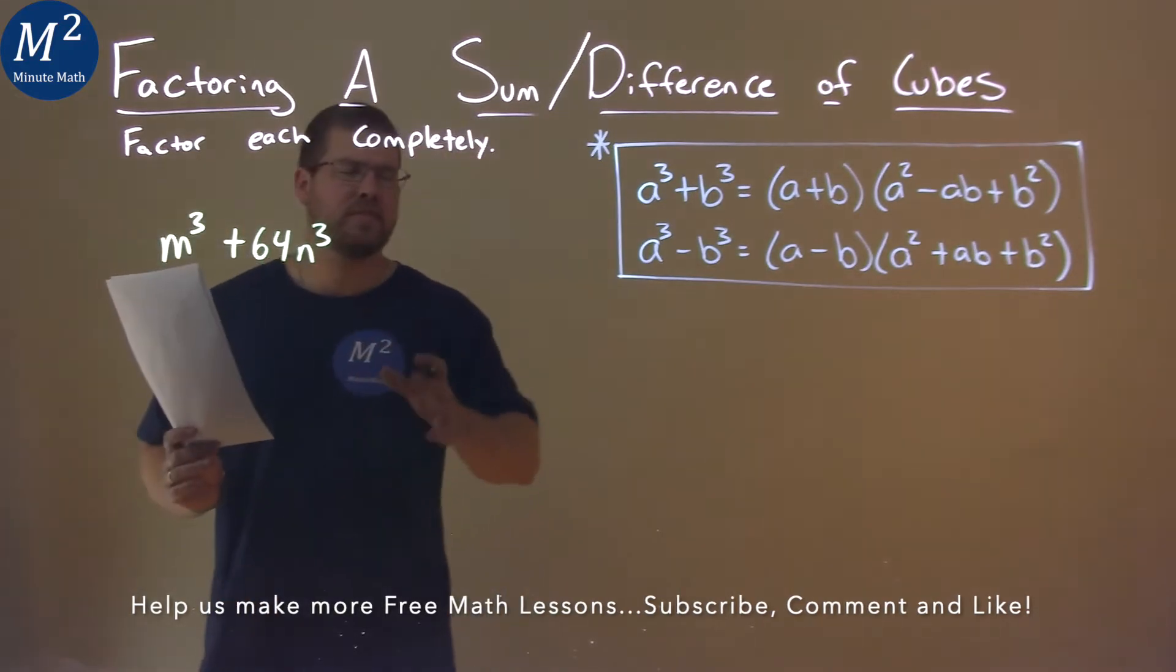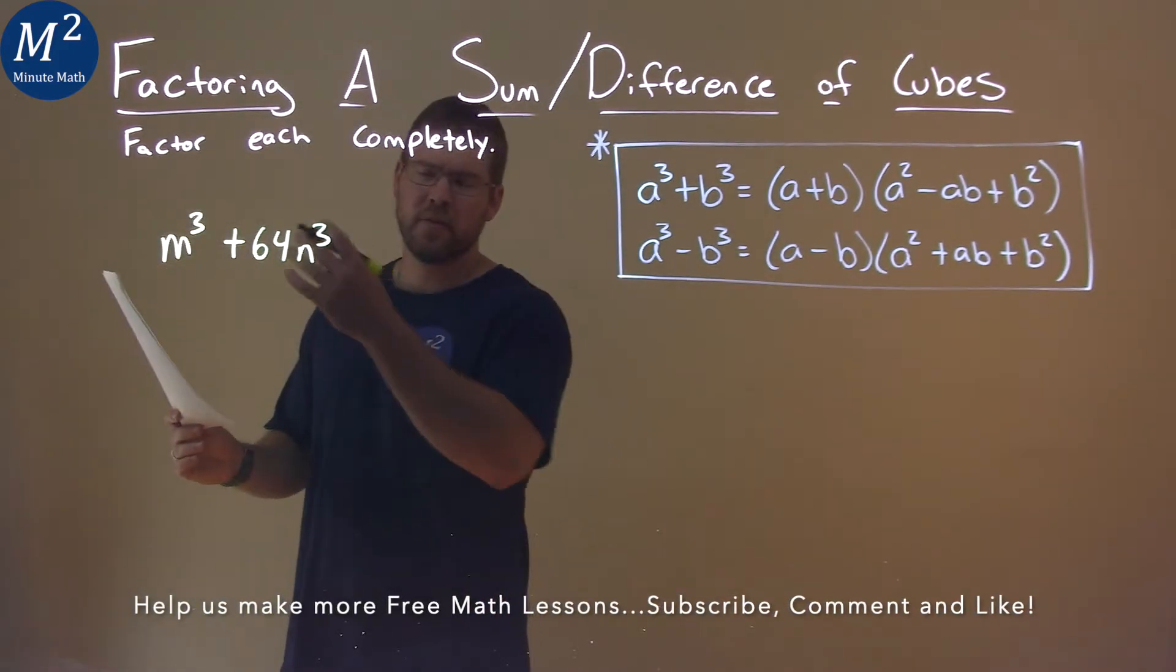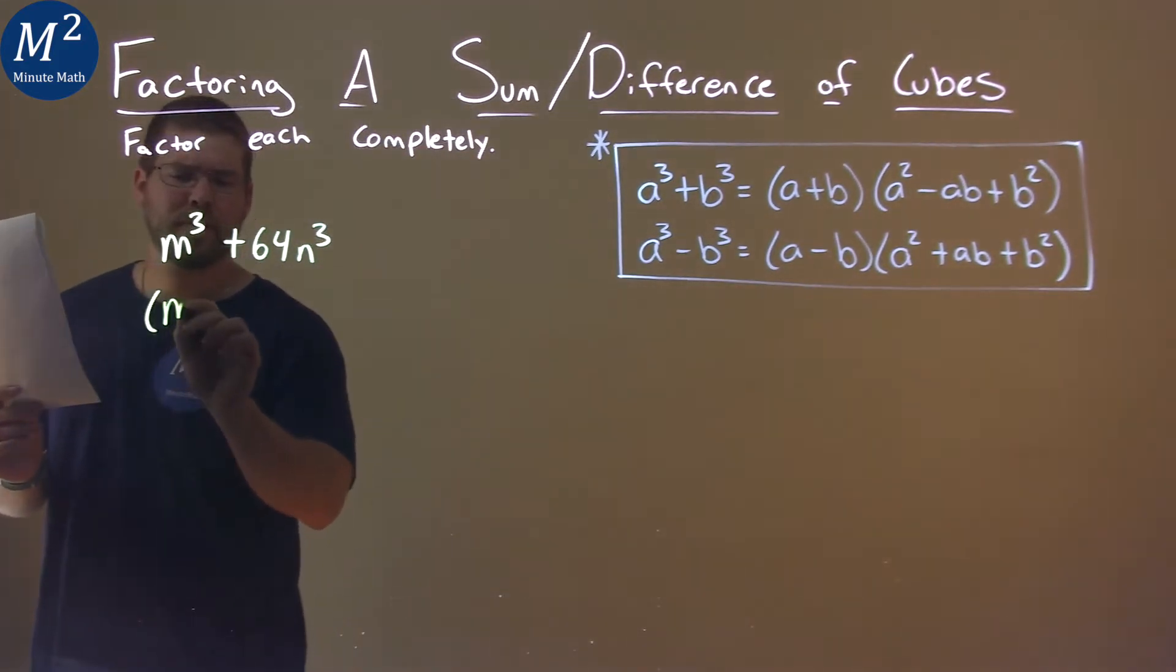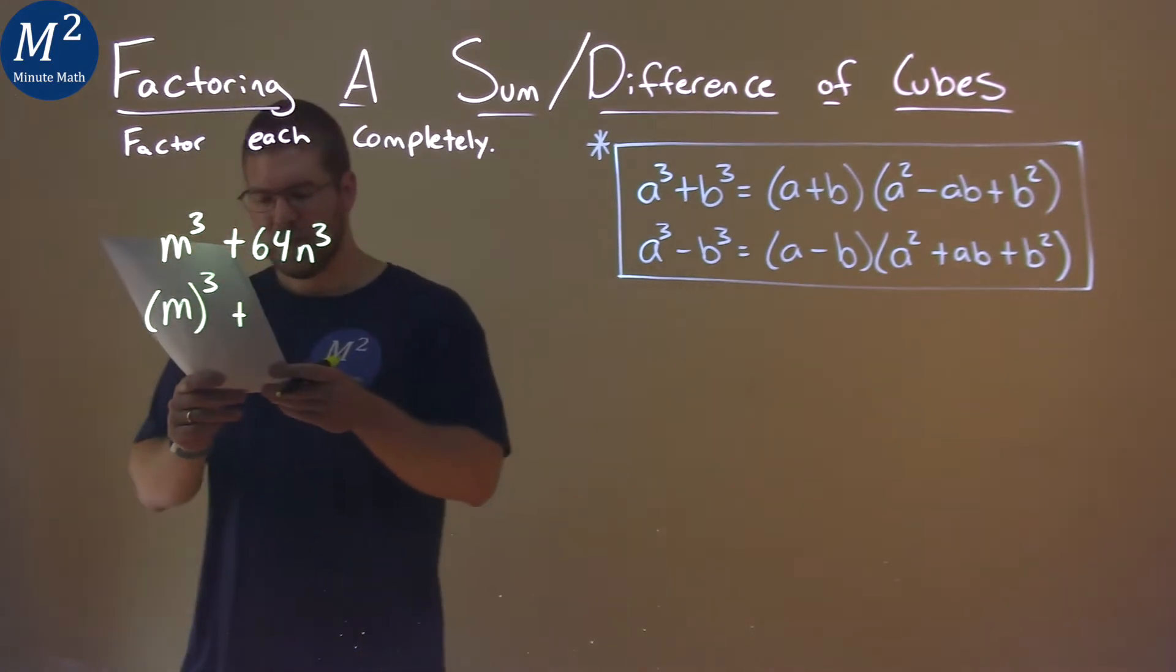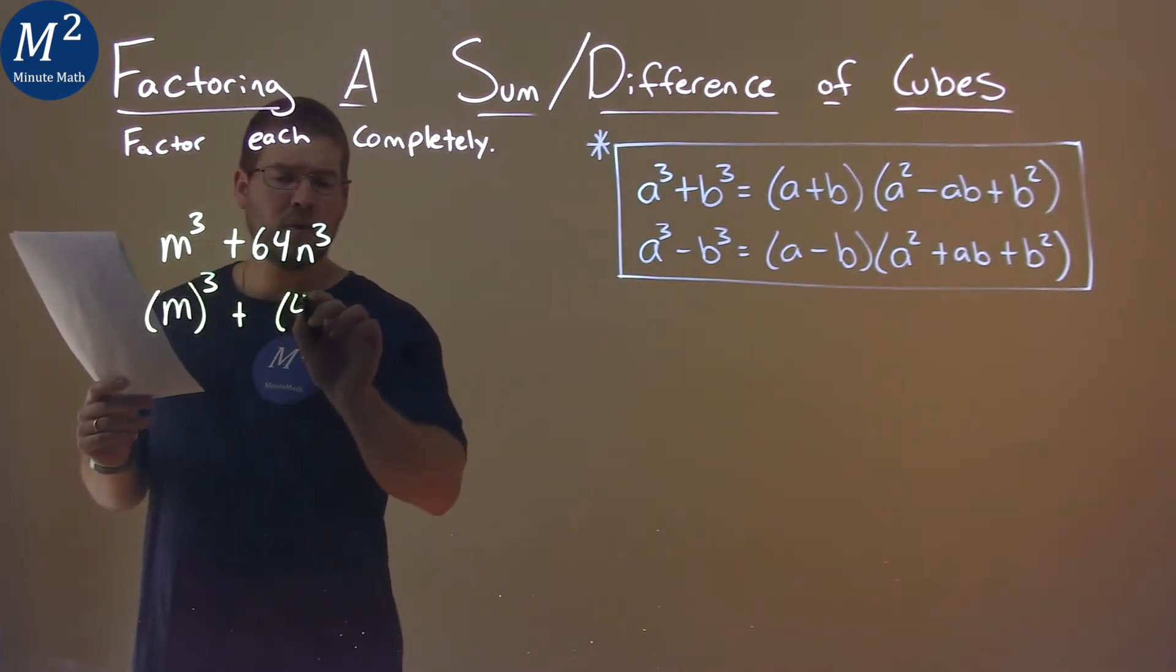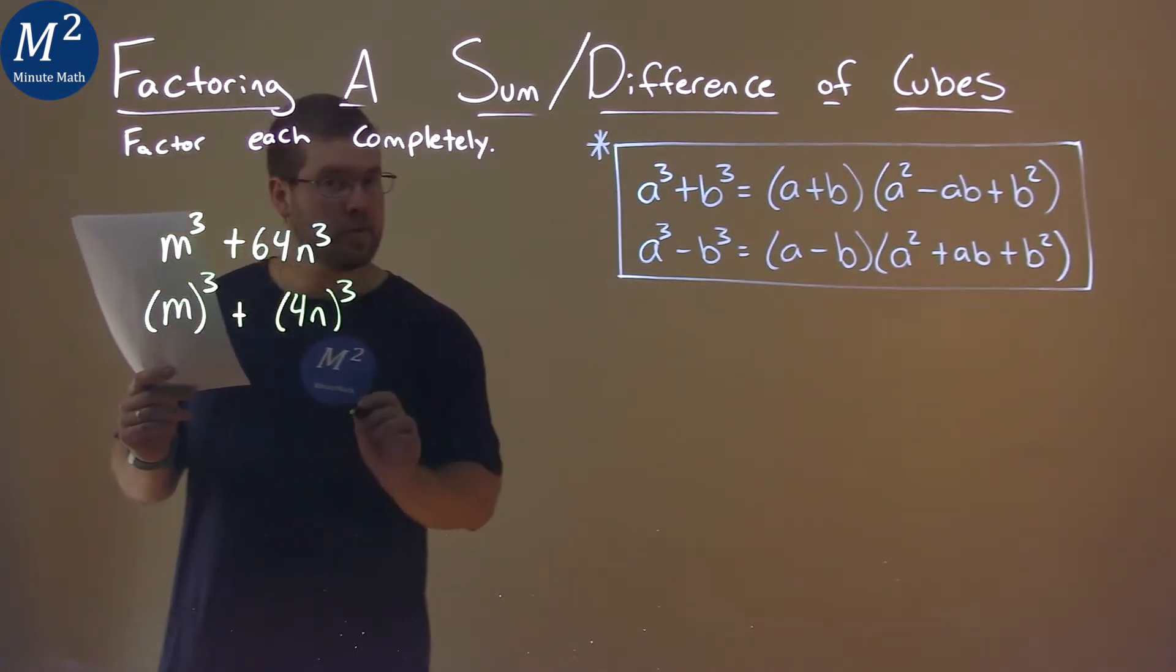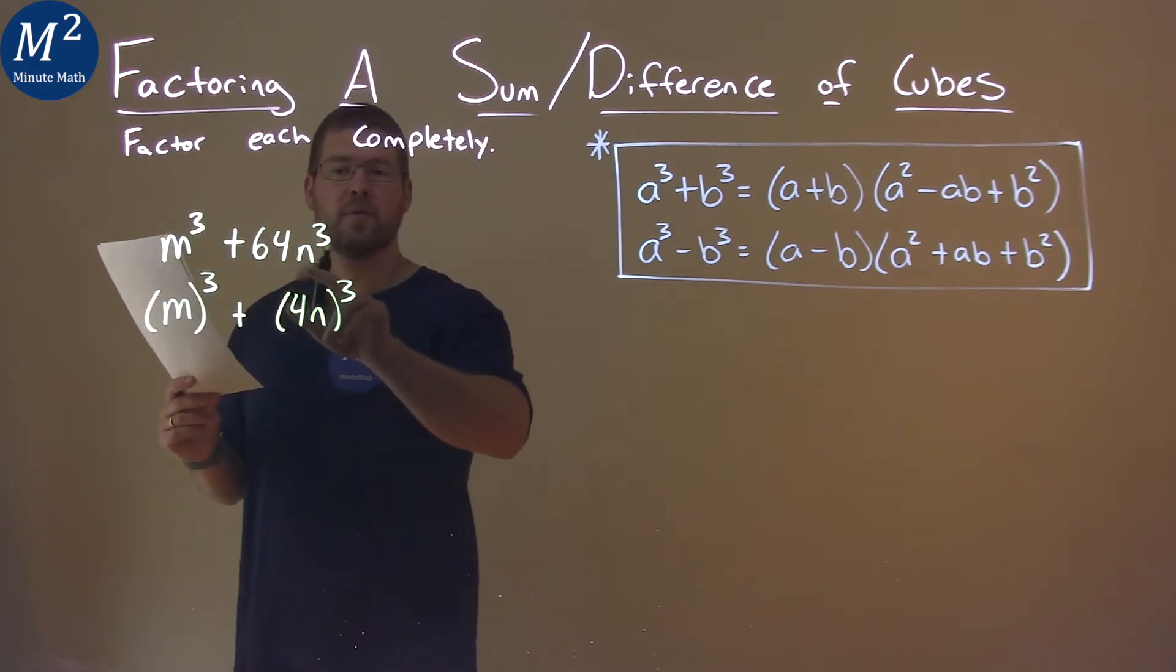I want to write this as a sum of two different cubes. The first part's kind of easy. If I put parentheses around the m and then I cube it, I got it. Second part, well, the cube root of 64 is 4, so 4n all cubed will be the same as 64n cubed.